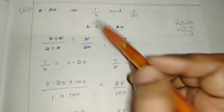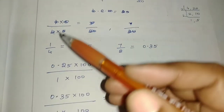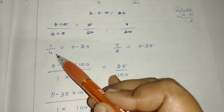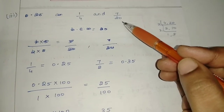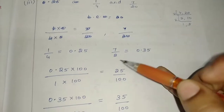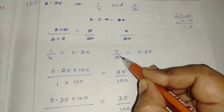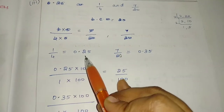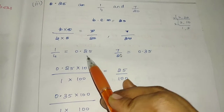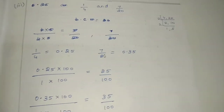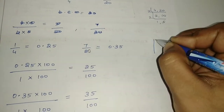We have a simple method. What do we do? 1 by 4. We change the sum — 1 by 4. What do we do? Divide. It is 0.25. If we look at the sum, the value of the sum is 0.25.